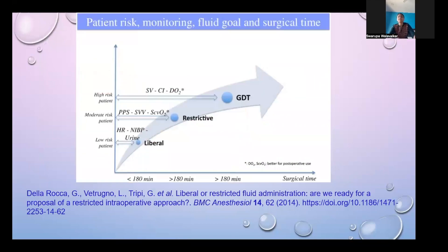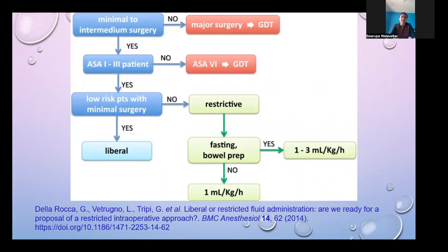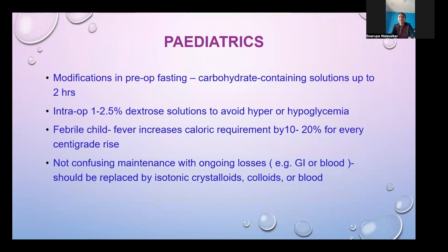As a practical decision framework: for minimal to intermediate surgeries in ASA 1–3 patients undergoing low-risk surgery, a liberal strategy can be used. If patients are high risk but the surgery is minimal, a restrictive strategy is appropriate. If the surgery is major, or the patient is high risk (ASA 4 and above), goal-directed therapy must be used.